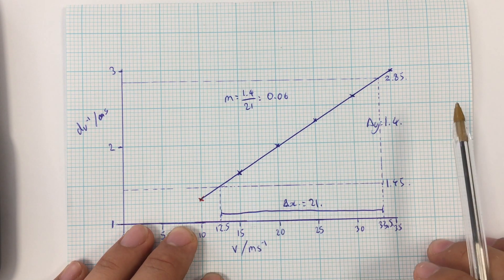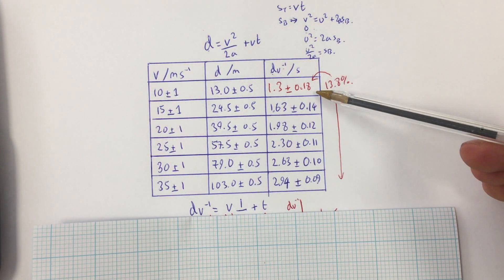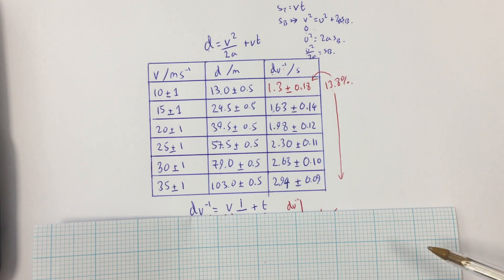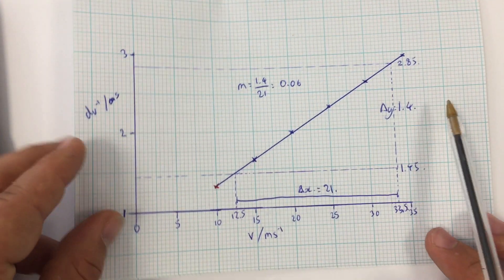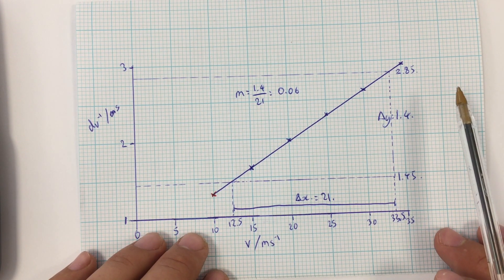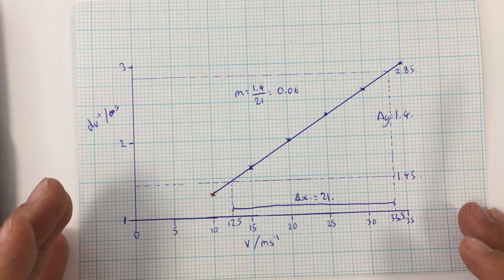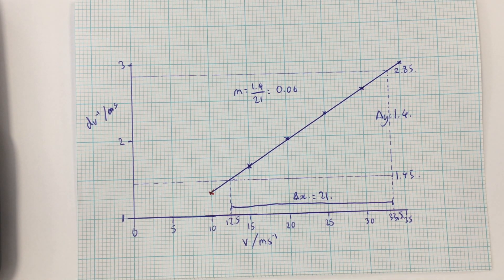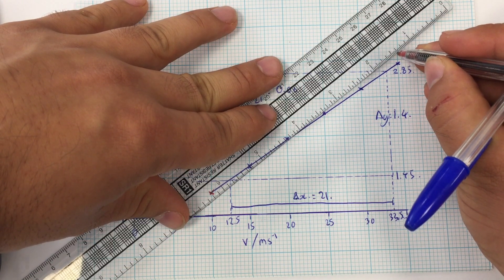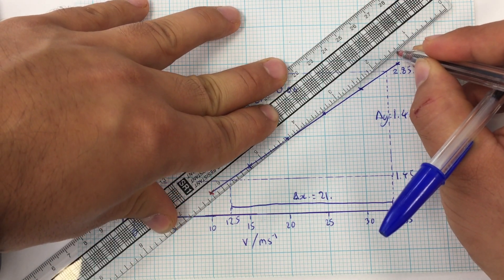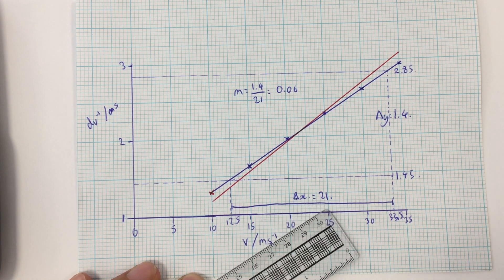To work out the percentage uncertainty in my gradient, I need to draw my line of worst fit. One way is to draw error bars for all absolute uncertainties and draw the worst fit line within those parameters. Another way is to draw what the worst situation you could get away with would be. Quite often in your exam the line of worst fit will be drawn for you. So I'm going to draw my line of worst fit — you can see the points are pretty spot on, but there would be some variation above and below the line.